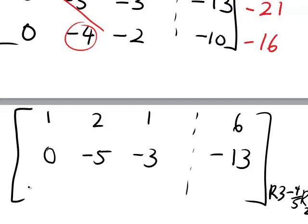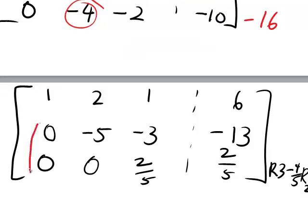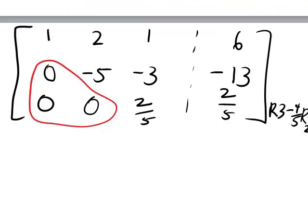Using R3 minus four fifths times R2: the first entry is zero minus zero; the next is negative four minus four fifths times negative five, which is zero as required; then negative two minus four fifths times negative three gives negative two plus twelve fifths, which simplifies to two fifths; and negative ten minus negative four fifths times thirteen gives negative ten plus fifty-two over five, which again gives two fifths. This is now our final tableau, with the triangular pattern of zeros below the principal diagonal.